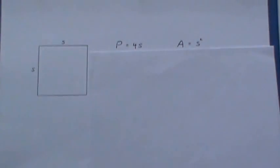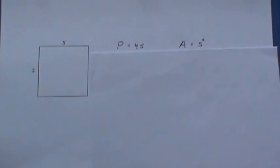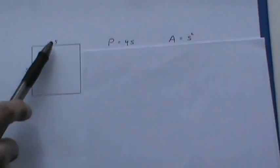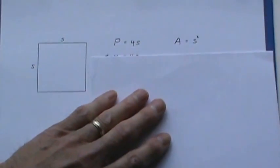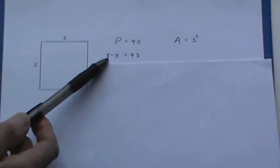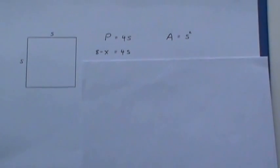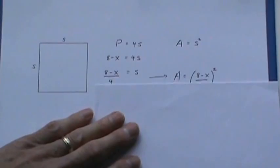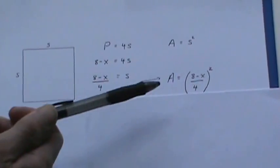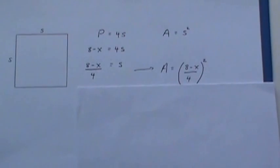Secondly I'm going to take the remainder of this which is 8 minus X and I'm going to use it to form the perimeter of a square. Now the perimeter is 4S, area is S squared and this time here's the perimeter where the X went for the circle circumference and if I divide by 4 I get a substitution for S in the area formula.